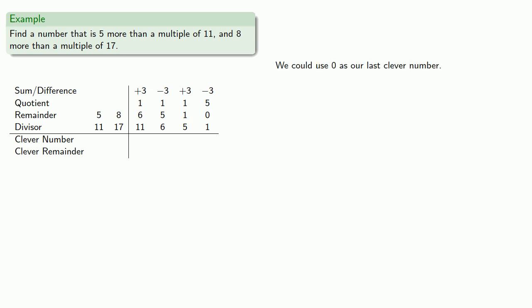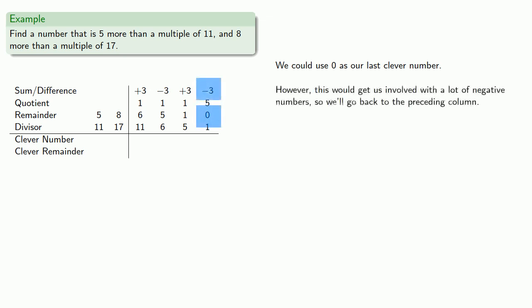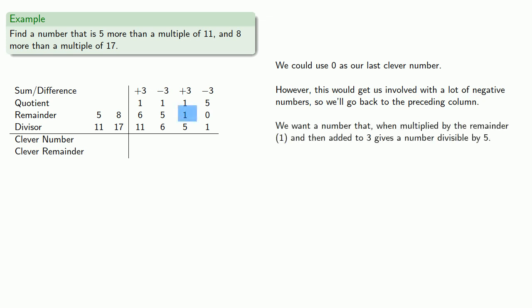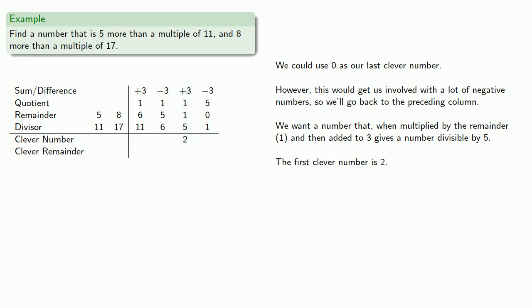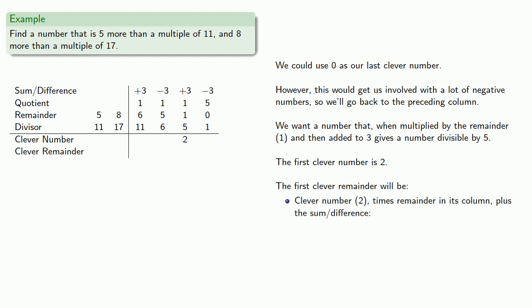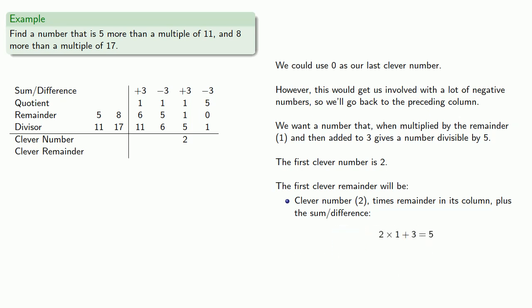But remember, we're going to multiply the clever number times the remainder and add the sum or difference. However, this would get us involved with a lot of negative numbers, so we'll go back to the preceding column. We want a number that when multiplied by the remainder 1 and then added to 3, gives a number divisible by 5. So we find the first clever number is 2. Our first clever remainder will be our clever number times the remainder in its column plus the sum or difference, divided by the divisor.